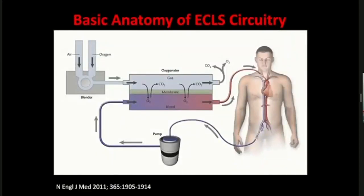This is the basic anatomy of the ECMO circuitry. Blood is taken from the venous system via a pump that provides negative pressure to draw blood from the patient's body. The blood is then pumped through an artificial membrane which works like an artificial lung. Oxygen and gas are supplied through the wall panels in the ICU, and there is mixing of oxygen and carbon dioxide through concentration gradient. The blood is then pumped back to the patient's body in the venous system.